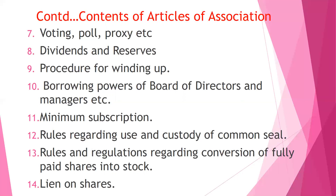As we discussed in the joint stock company features, the Articles of Association specifies all rules relating to the usage and custody of the common seal. Rules relating to conversion of fully paid shares into stock are mentioned, and details relating to lien on shares are also specified. The contents can be drafted according to the requirements of the company — it is not compulsory to have all 14 or more; based on the company's requirements, they can draft the contents.